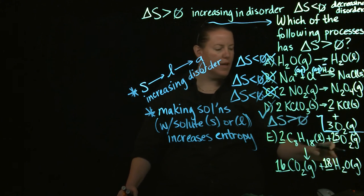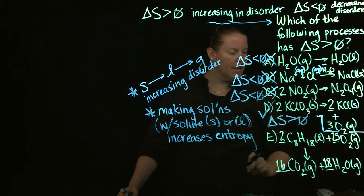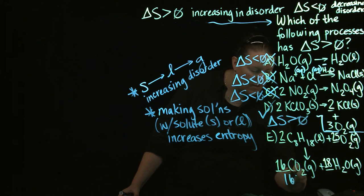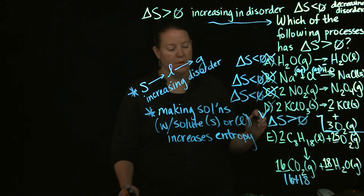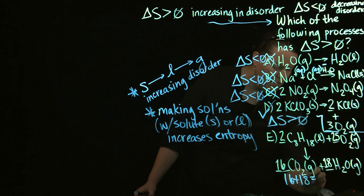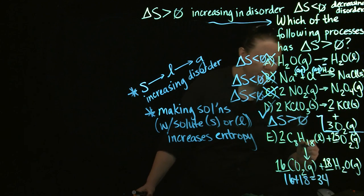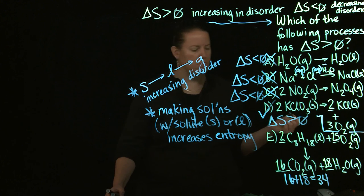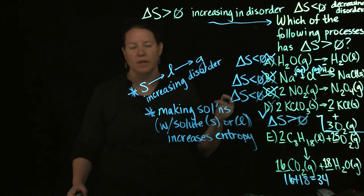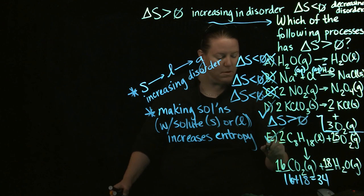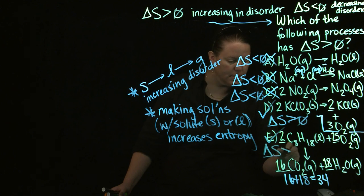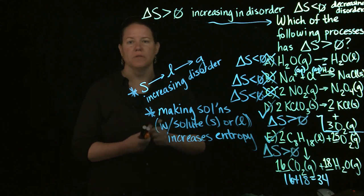And E, again, looking at moles of gas. I have 25 moles of gas on this side and I have 16 moles of gas and 18 moles of gas. So is 16 plus 18 greater than 25? That's really what I'm asking. Well, 16 plus 18, if I'm not incorrect, I think should be something like 34. Is that right? Seems right-ish. So is 35 moles of gas greater than 25 moles of gas? Yes, it is. So delta S is greater than zero here as well.